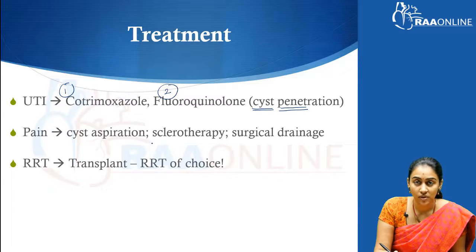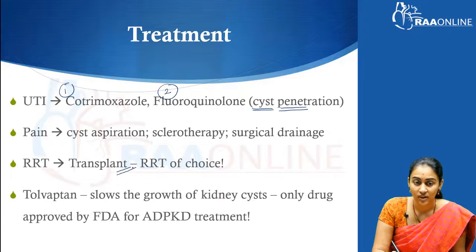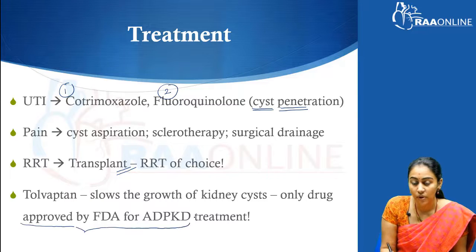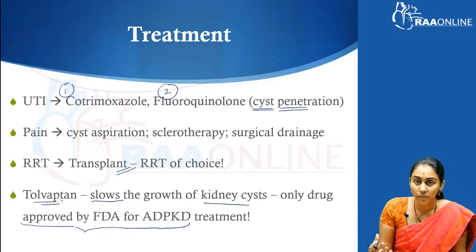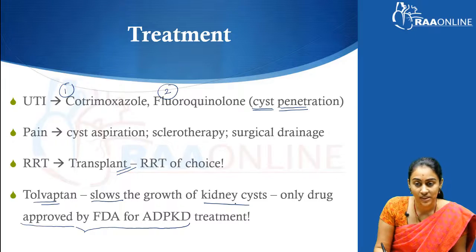Initial pain management is done with routine analgesics like NSAIDs. The renal replacement therapy of choice in these patients is renal transplantation. The only drug approved by the FDA for treatment of autosomal dominant polycystic kidney disease to slow the growth of kidney cysts is Tolvaptan. This is because cyst formation is a vasopressin-mediated process, and Tolvaptan, a vasopressin antagonist, has a role in slowing cyst growth.